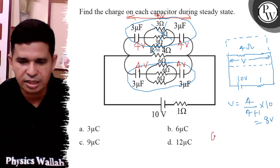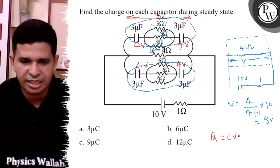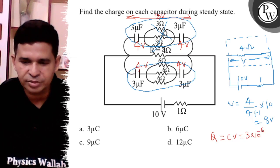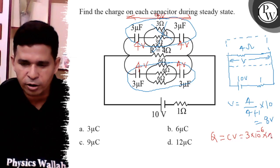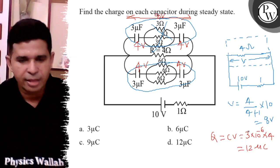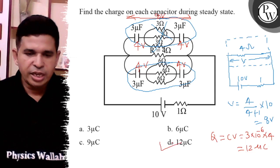And what is the charge? It is nothing, it is the C into V. C is the 3 microfarad into V is 4. So, answer is 12 microcoulomb. So, answer is D. Thank you. All the best.